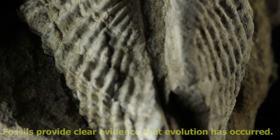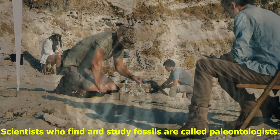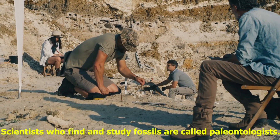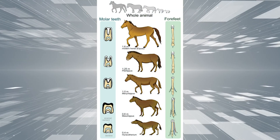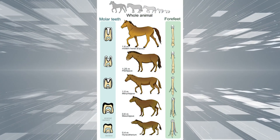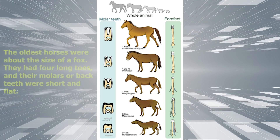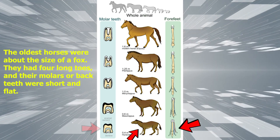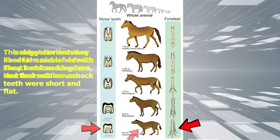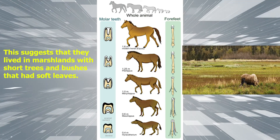Let's start off with fossil records first. Fossils are a window into the past — they provide clear evidence that evolution has occurred. Scientists who find and study fossils are called paleontologists. Consider the example of the horse shown below. The fossil record shows how the horse evolved. The oldest horse fossils show what the earliest horses were like: they were about the size of a fox, had four long toes, and their molars or back teeth were short and flat, suggesting they lived in marshlands with soft leaves.